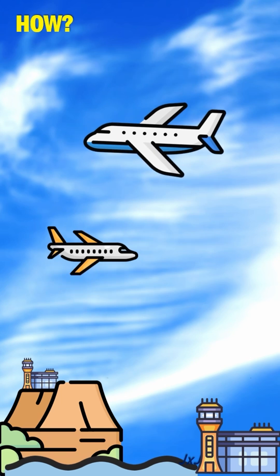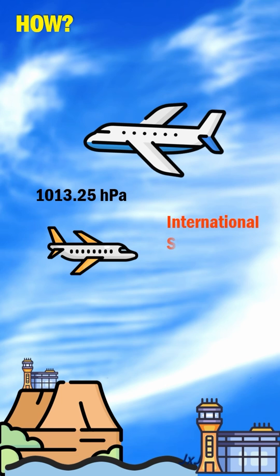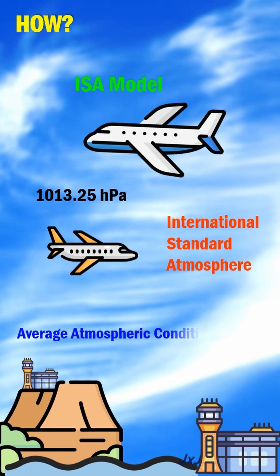How is the standard setting derived? The standard QNH setting is 1013.25 hectopascals. This is derived from the International Standard Atmosphere Model. The ISA model gives the average atmospheric conditions at sea level, which is pressure, temperature, and density.